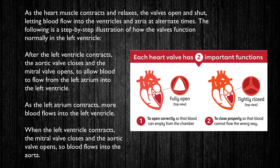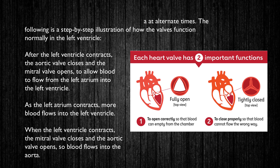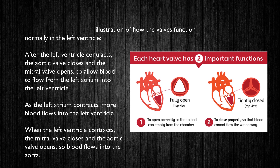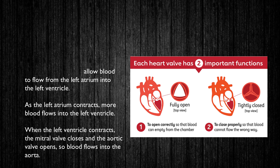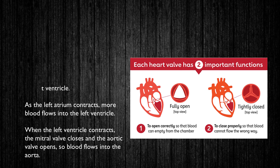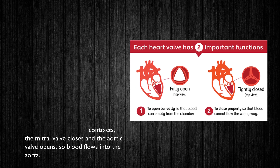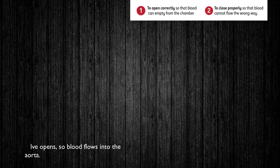After the left ventricle contracts, the aortic valve closes and the mitral valve opens to allow blood to flow from the left atrium into the left ventricle. As the left atrium contracts, more blood flows into the left ventricle. When the left ventricle contracts, the mitral valve closes and the aortic valve opens, so blood flows into the aorta.